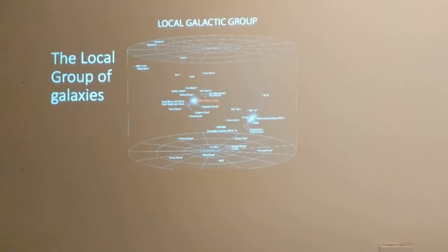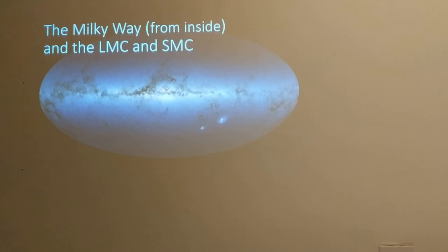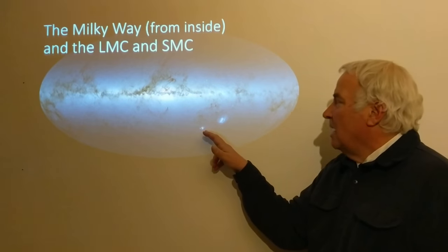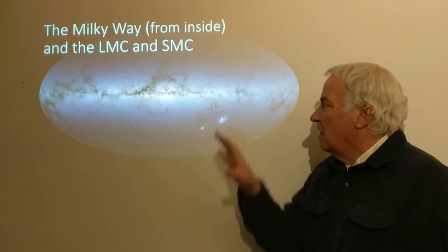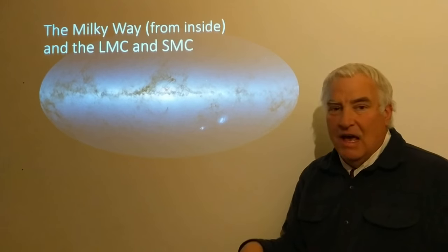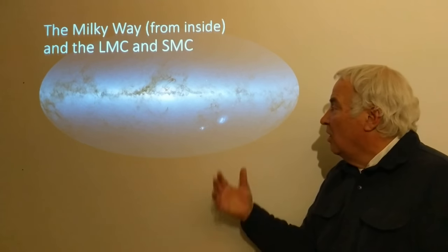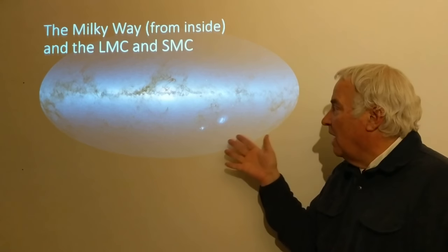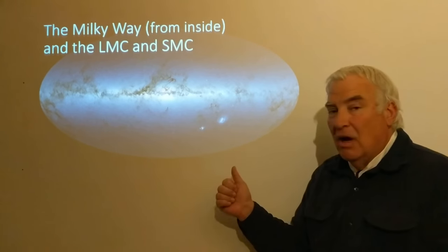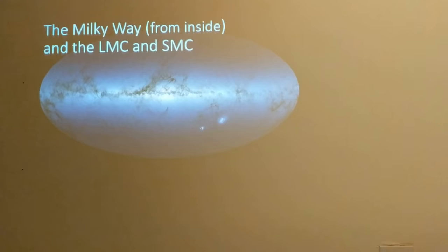The Milky Way from inside looks like this. The Large Magellanic Cloud is here and the Small Magellanic Cloud is here. This is from the Gaia data — our view from inside the Milky Way based on actual data, whereas the top-down map has to be constructed as described before. Our own galaxy has quite a number of smaller companion galaxies.